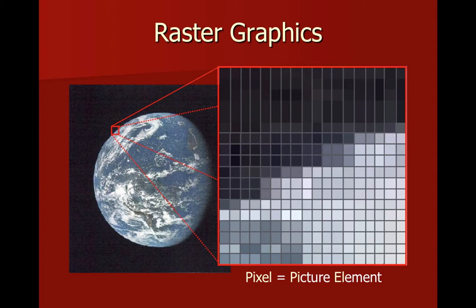Raster graphics are the most common type of computer graphic you're going to work with. In this slide, I found a raster image of the Earth, which I put on the left-hand side of the slide. And on the right-hand side, I zoomed in on the curvature of the Earth so you can see what the raster graphic is made up of. And as you can see, it's basically a grid. Each of the squares in that grid is called a pixel.